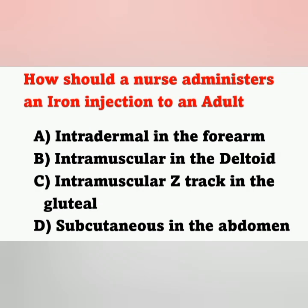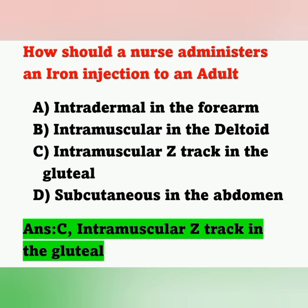Question 6: How should a nurse administer an iron (IM) injection to an adult? Options: A) intradermal in the forearm, B) intramuscular in the deltoid, C) intramuscular Z-track in the gluteal, D) subcutaneous in the abdomen. The correct answer is option C — iron injection is irritable and should be given deep IM using the Z-track method in the gluteal muscle.